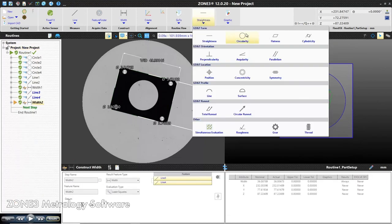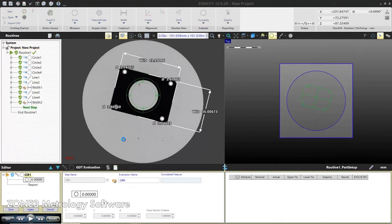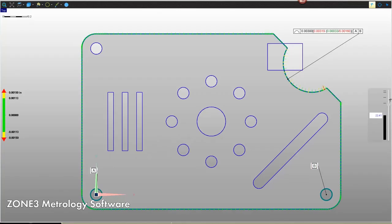Zone 3 uses ASME Y14.5 and ISO 1101 standards for GD&T, and results can be output graphically to truly visualize the result.